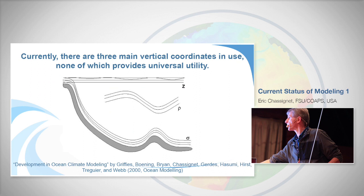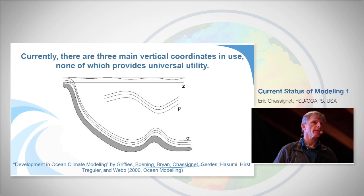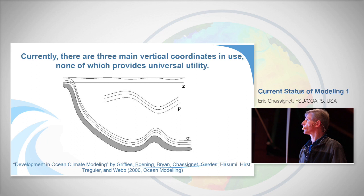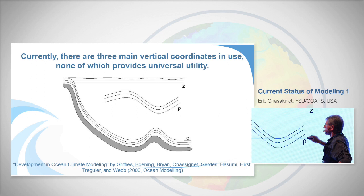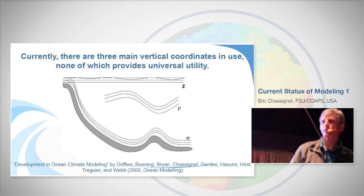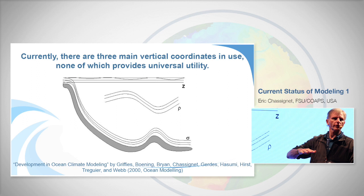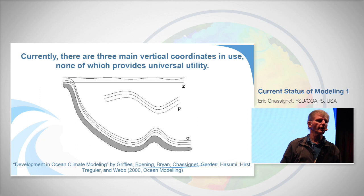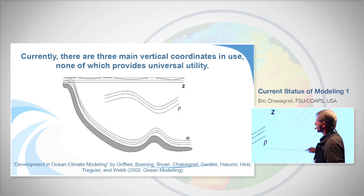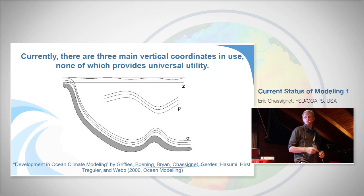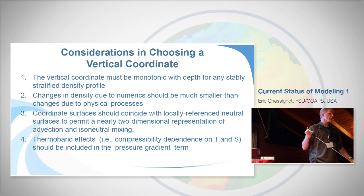Let me spend some time on vertical coordinates, as they have a strong impact on how the ocean interior is represented. Currently there are three main vertical coordinates: the classic Z-coordinate — constant horizontal layers — which Brian Cox started; isopycnic layers, a natural physical coordinate following constant density surfaces; and sigma or terrain-following coordinates, introduced by John in the context of ROMS, where the coordinate stretches in the vertical to follow topography. They all have advantages and disadvantages.